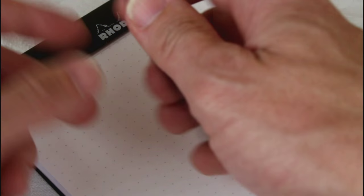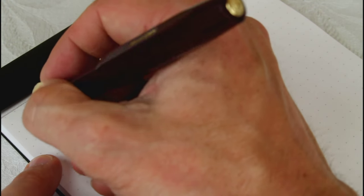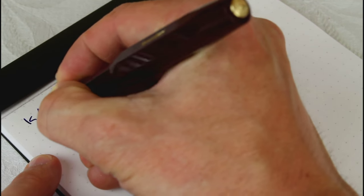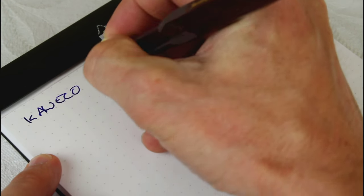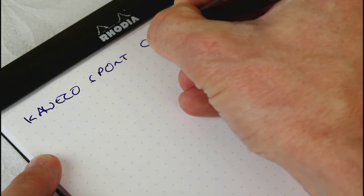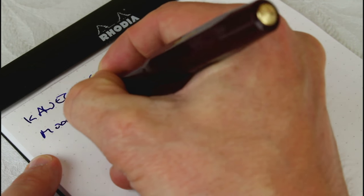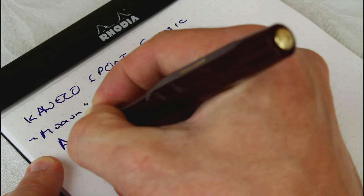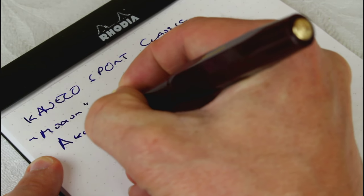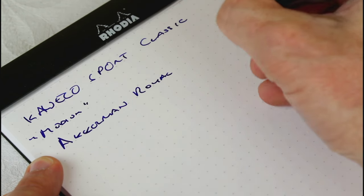Okay, coming in for a little writing sample here. Never the easiest thing to do, always working around a camera, so please excuse my handwriting. It's not the best at the best of times. But this is the Kaweco Sport Classic, and it's a medium nib, and it's inked up with the Ackerman Royal Blue.